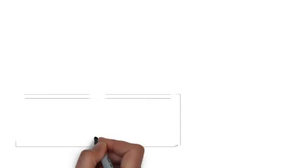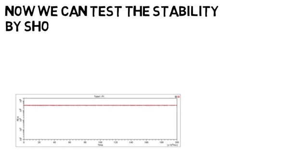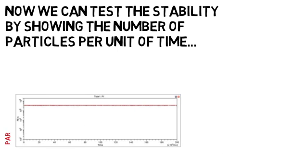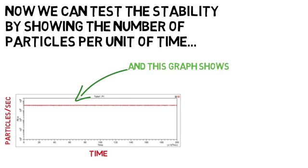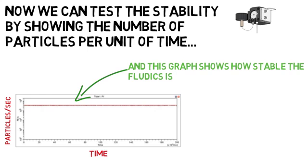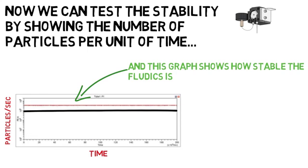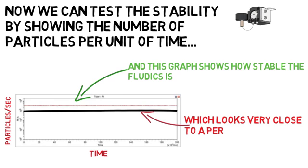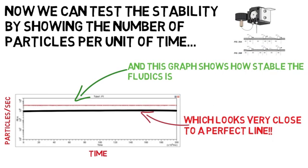What we see when we monitor sample number versus time is a perfectly flat line. This implies that the peristaltic pump is not creating pulses, which is really important. This is related to the unique design of the pump, so that any pulses are removed using a clever design feature of the pump itself.